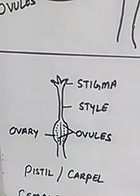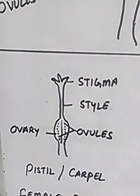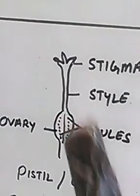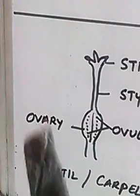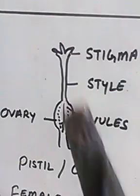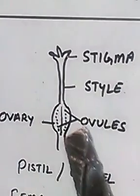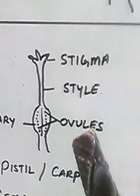The ovary is the swollen part at the base. It is the last base which is slightly swollen. The ovary contains a ball-like structure called the ovule — a small ball-like structure inside the ovary.